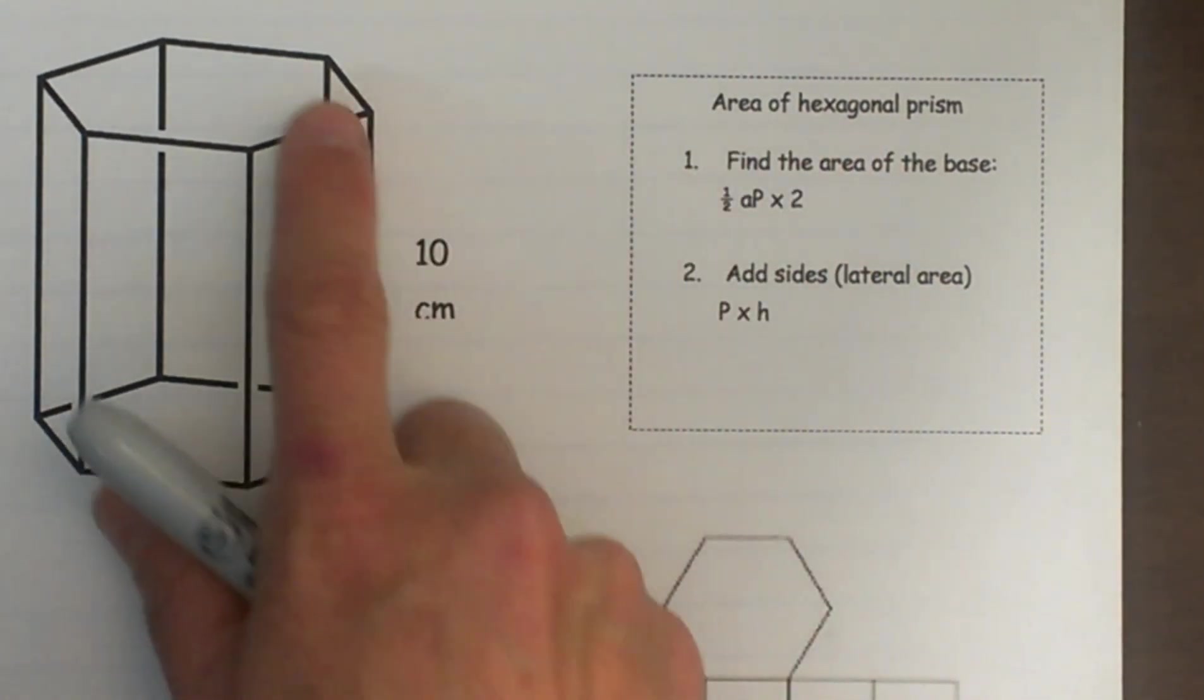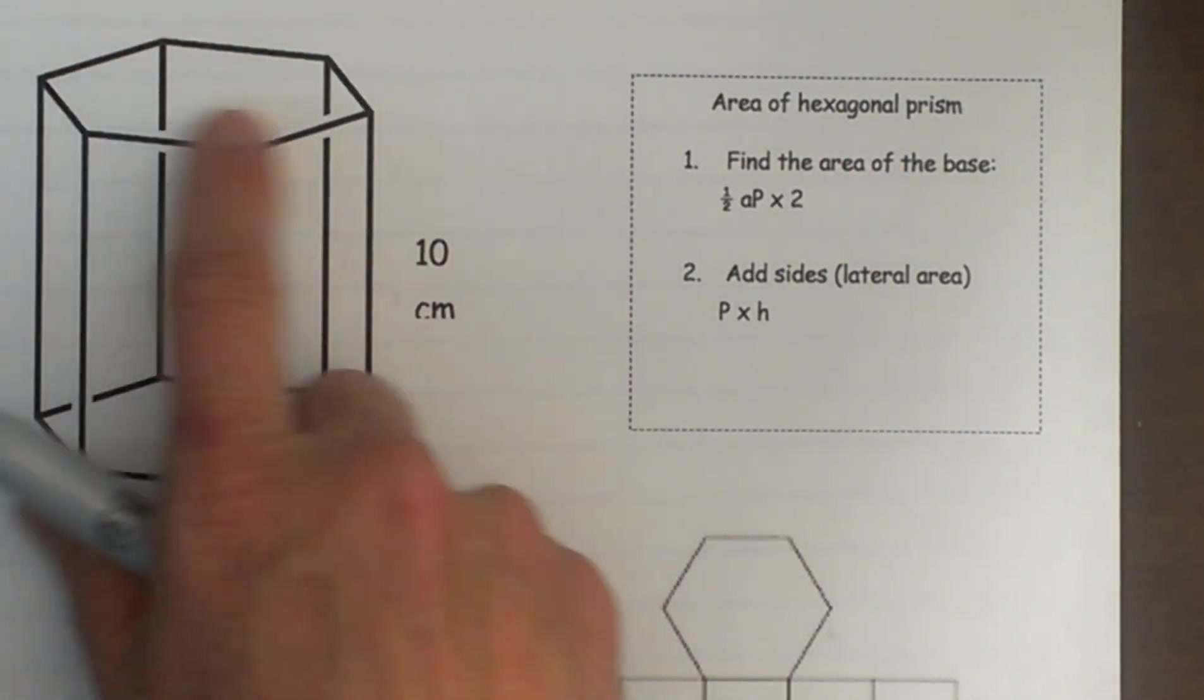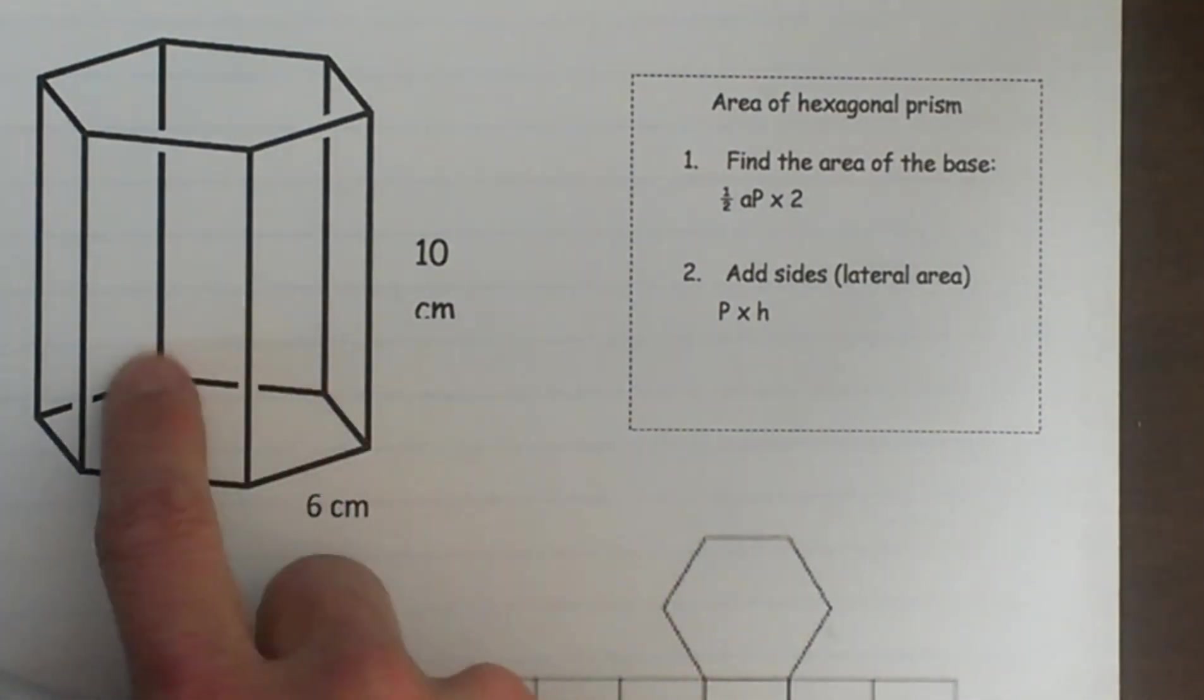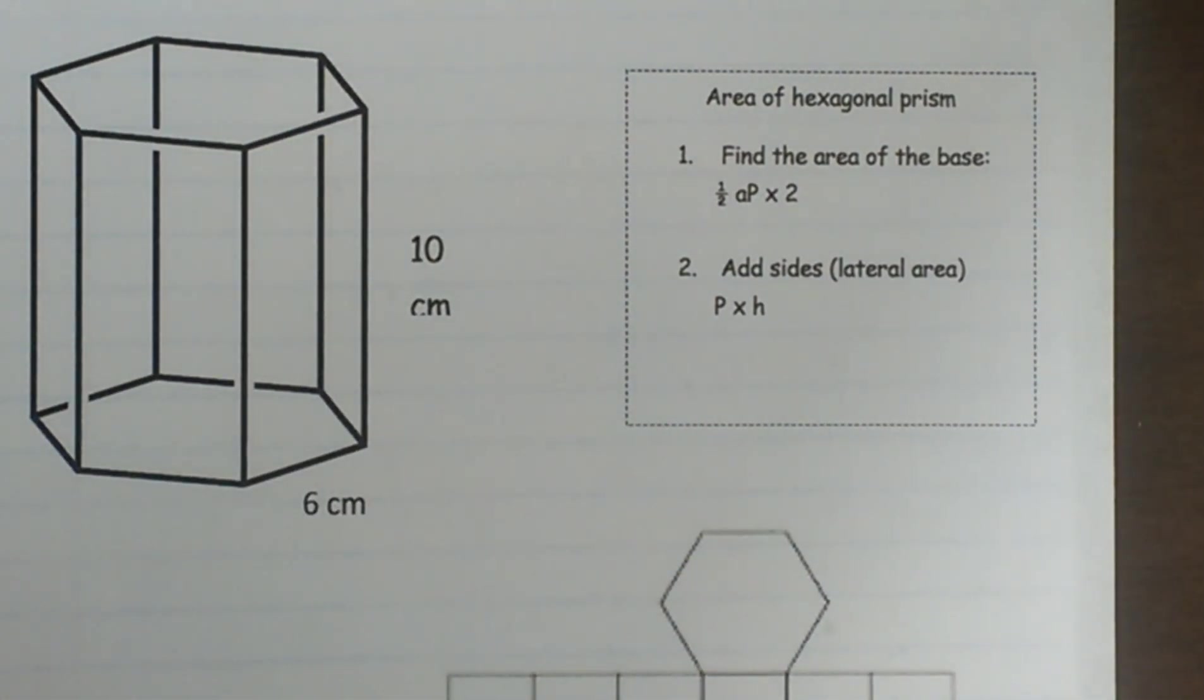What is a hexagonal prism? A hexagonal prism is a prism which has two parallel bases and the base is described as a hexagon. We have six sides here and six sides here and they're parallel. That is a hexagonal prism.